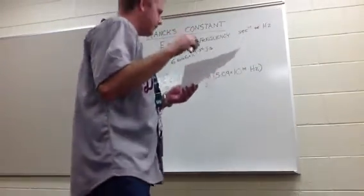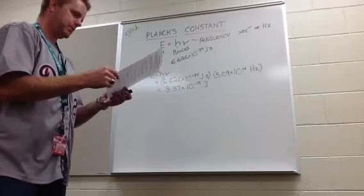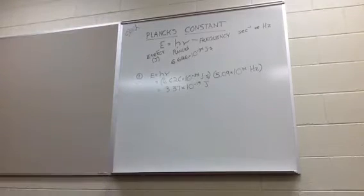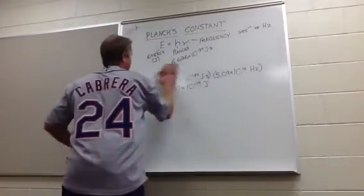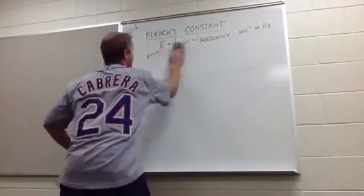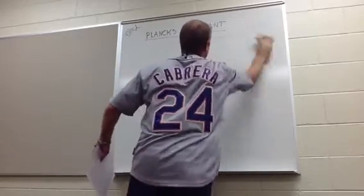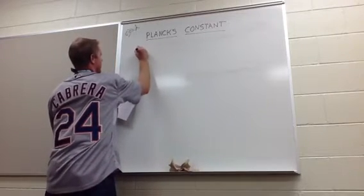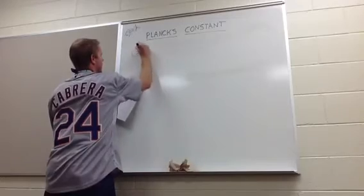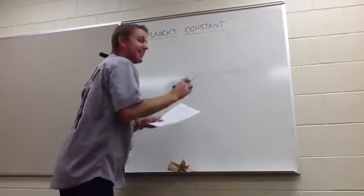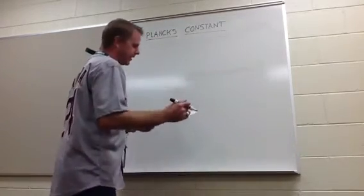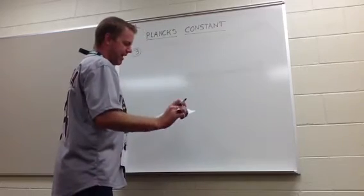Let's do one that's a little more complicated now. Let's do number 3 — it's a cool one because it involves multiple equations. Number 3 says: calculate the energy in kilojoules per photon for a green light having a wavelength of 550 nanometers.